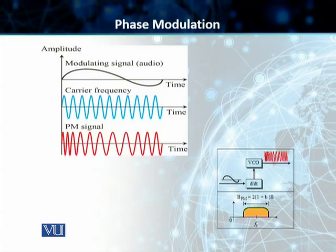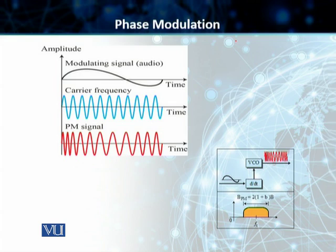Students, once again, what you can see on this slide is you have got a modulating signal — once again, audio. Then you have got a VCO-produced carrier frequency. And then you have got a phase modulated signal. As the amplitude of the information signal changes, the phase of the carrier changes correspondingly.